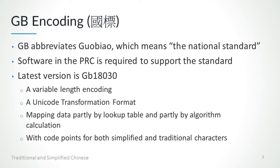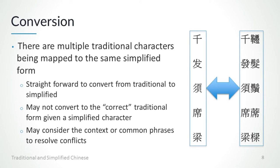As it is a Unicode transformation format, there are indeed code points for both simplified and traditional characters. While conversion between traditional and simplified Chinese is usually automatic, in some cases the conversion is not a simple mapping. This is because sometimes there are multiple traditional characters that are mapped to the same simplified form. In such cases, while the traditional to simplified conversion is straightforward, the opposite conversion may result in an incorrect choice of the traditional form, and therefore the conversion programs will need to consider the context or common phrases to resolve the conflicts.